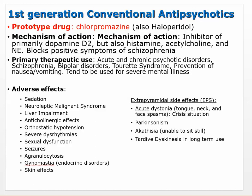Your first-generation conventional antipsychotic prototype is chlorpromazine, also called Thorazine, though haloperidol is probably seen more often. Mechanism of action: primarily an inhibitor of the dopamine D2 receptor, but it also blocks histamine, acetylcholine — causing anticholinergic effects — and norepinephrine, which can cause orthostatic hypotension. Some sedation comes from blocking histamine, so it's also antihistamine and anticholinergic. The primary therapeutic effect comes from dopamine antagonism.